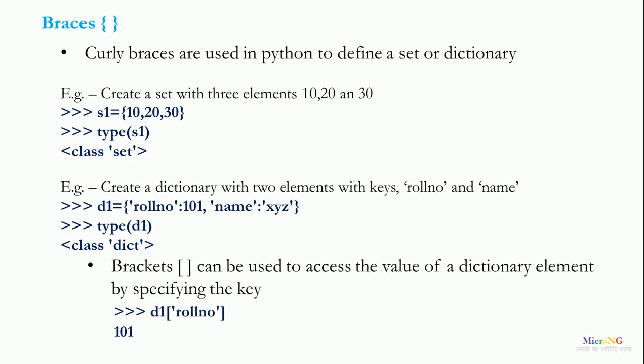Similarly, curly braces can also be used for creating a dictionary. We create a dictionary D1 with two keys: roll number with value 101, and name with value XYZ. Since elements are included inside curly braces with key-value pairs, D1's type is a dictionary. To access a value, we use brackets: D1 bracket roll number displays 101.